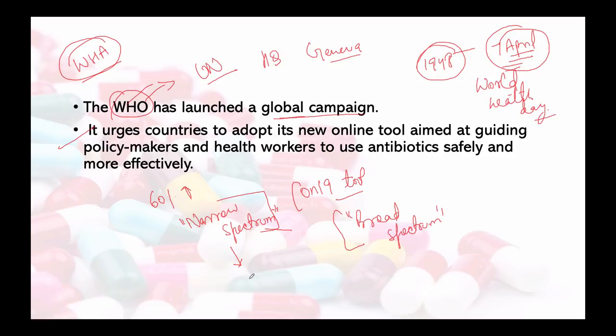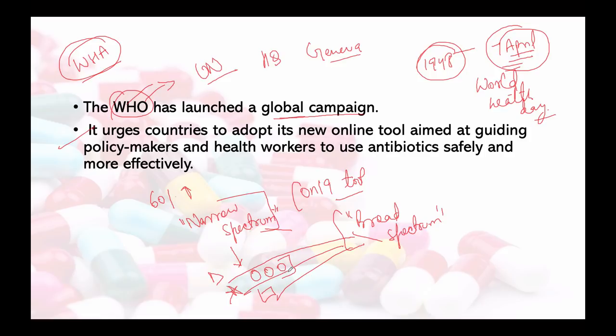Suppose round bacteria have attacked our body, but our body also has useful microorganisms like triangular, star, and square shapes. A broad spectrum antibiotic will kill all the bacteria — including the useful ones. A narrow spectrum antibiotic is specific — it will only act against the bacteria it is targeted at. So narrow spectrum is more useful because it reduces the risk of resistance.